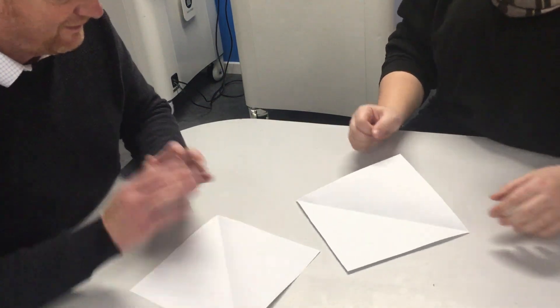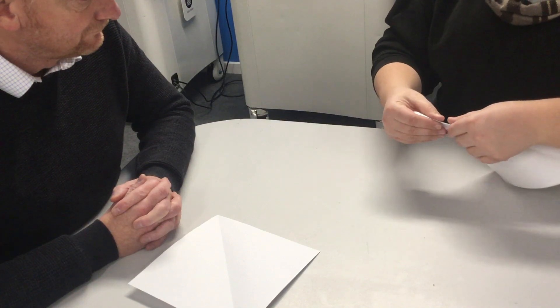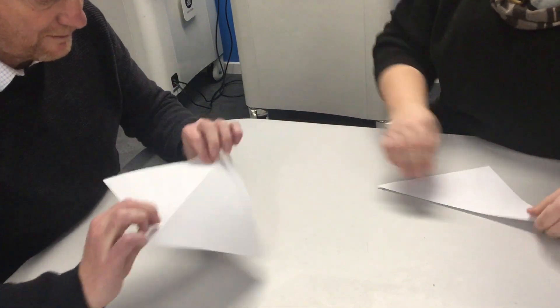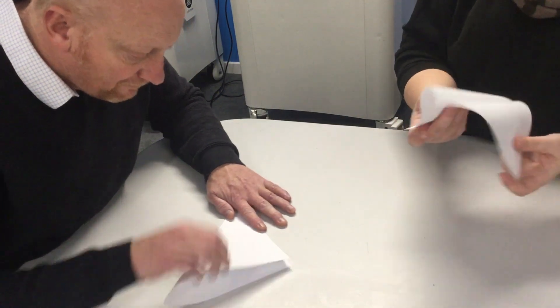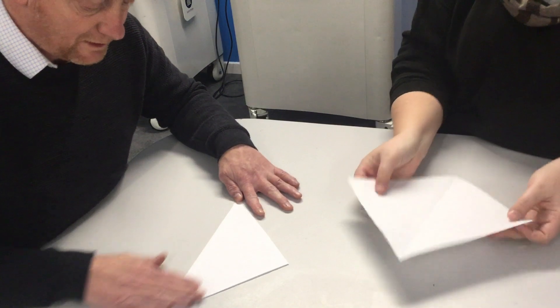So every fold we do, we're going to do it that way and then we're going to reverse it and do it the other side as well. So we're kind of scoring it both ways so it folds nice and sharp. So it bends this way and this way.